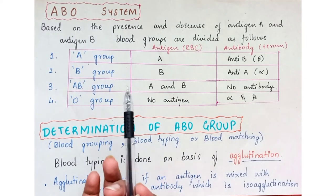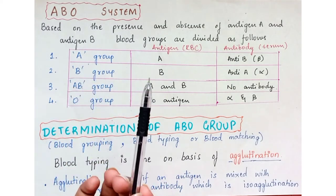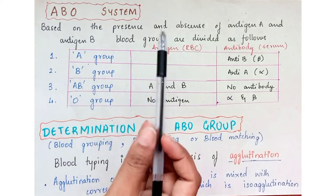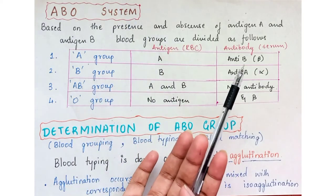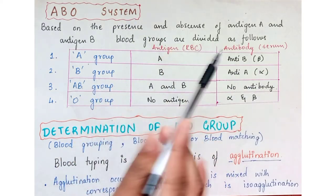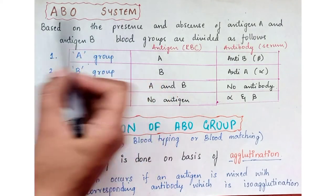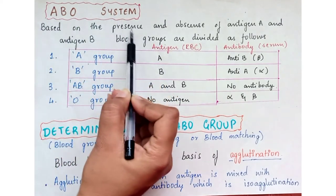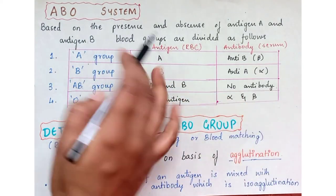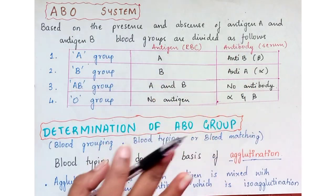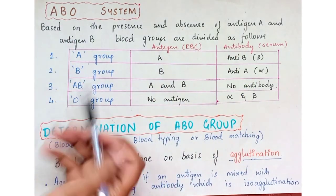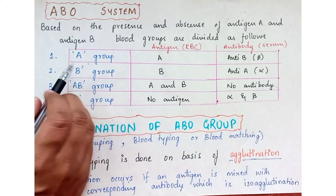The ABO blood group system is based on the presence and absence of antigen A and antigen B. Based on whether A or B is present or absent, the blood groups are divided.